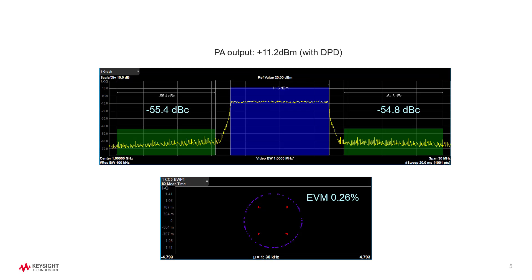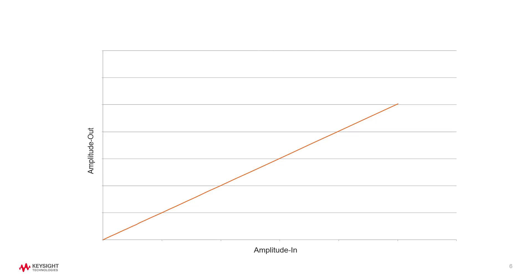If you enable DPD while maintaining the same power level, you can see ACPR and EVM are significantly improved and much closer to linear operation. So how does DPD do its trick? You can think about the PA input and output power relationship.